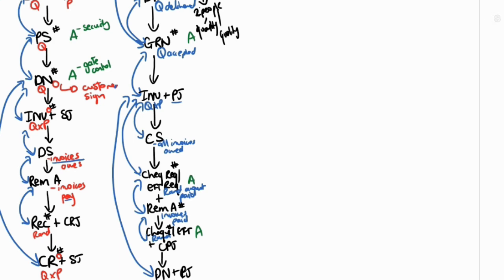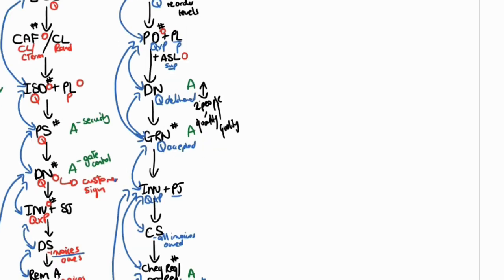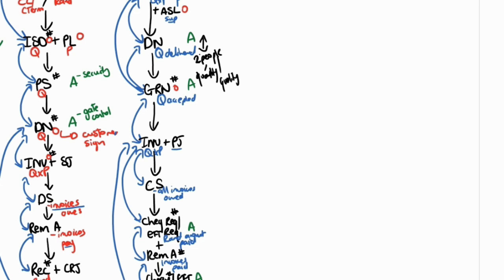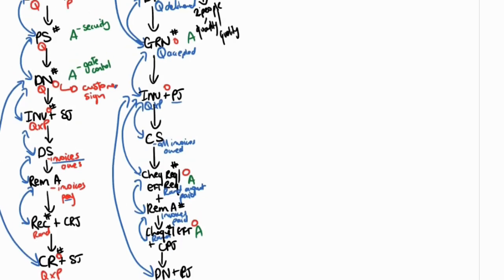There are also access controls to the EFT requisition on the computer side — logging on to process an EFT. Lastly, for authorization: authorization is required for the purchase requisition, the purchase order, and the authorized supplier listing. On receiving of the goods, authorization of the goods received note is needed to make sure only goods received are recorded. Authorization is also needed for the invoice and for the cheque or EFT requisition, to ensure only authorized people are approving payments.